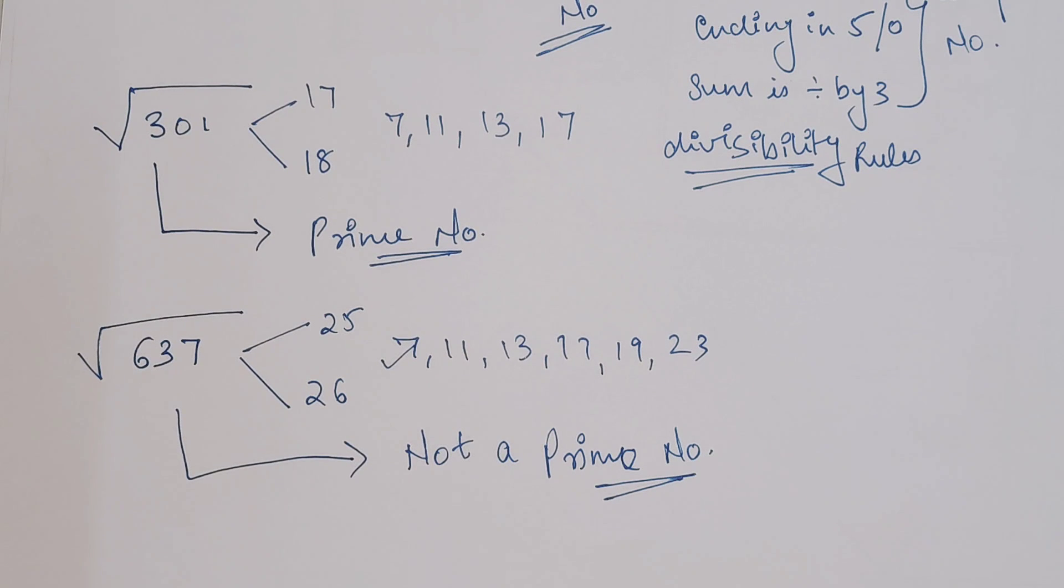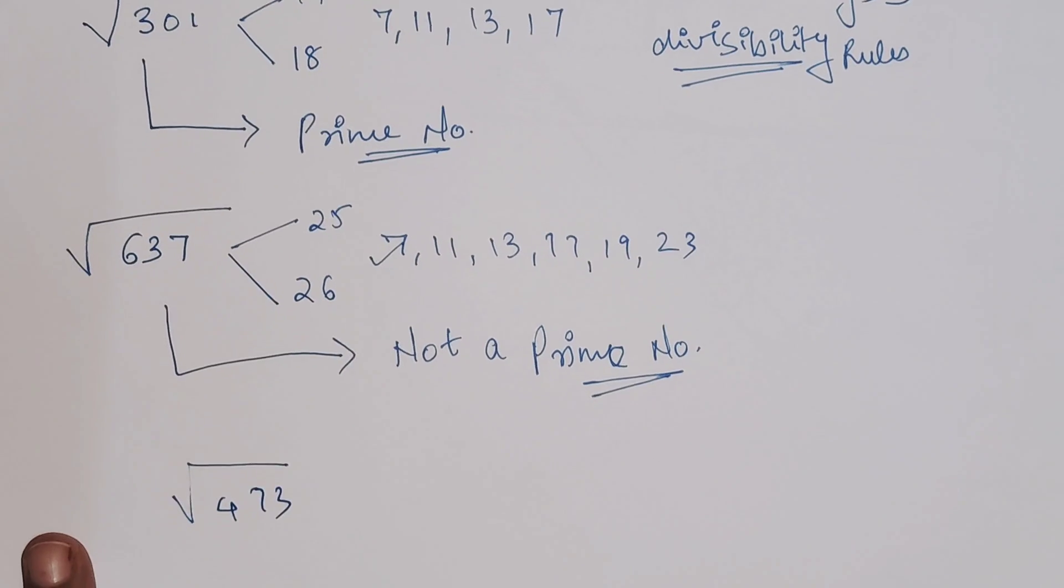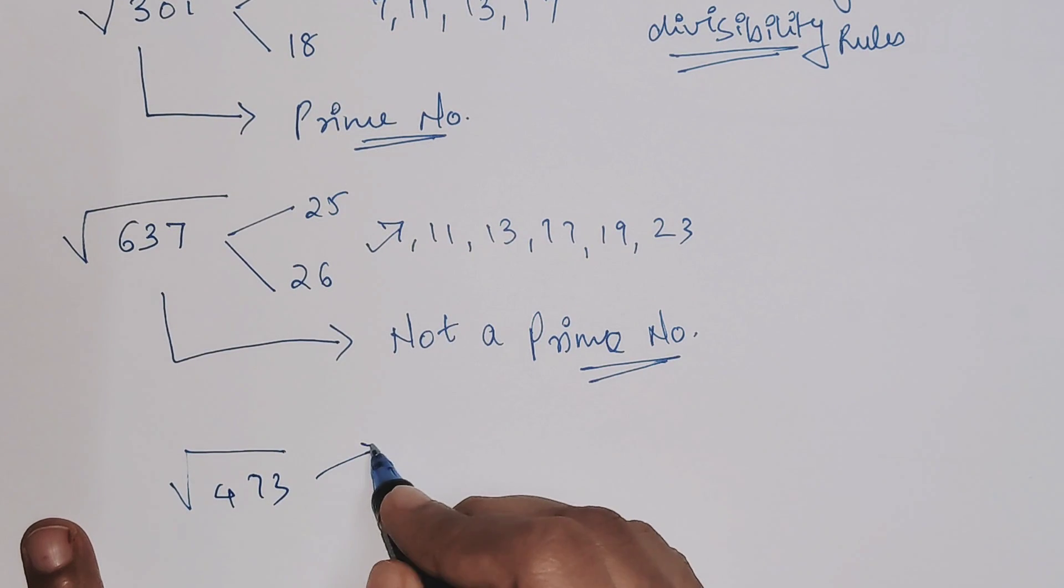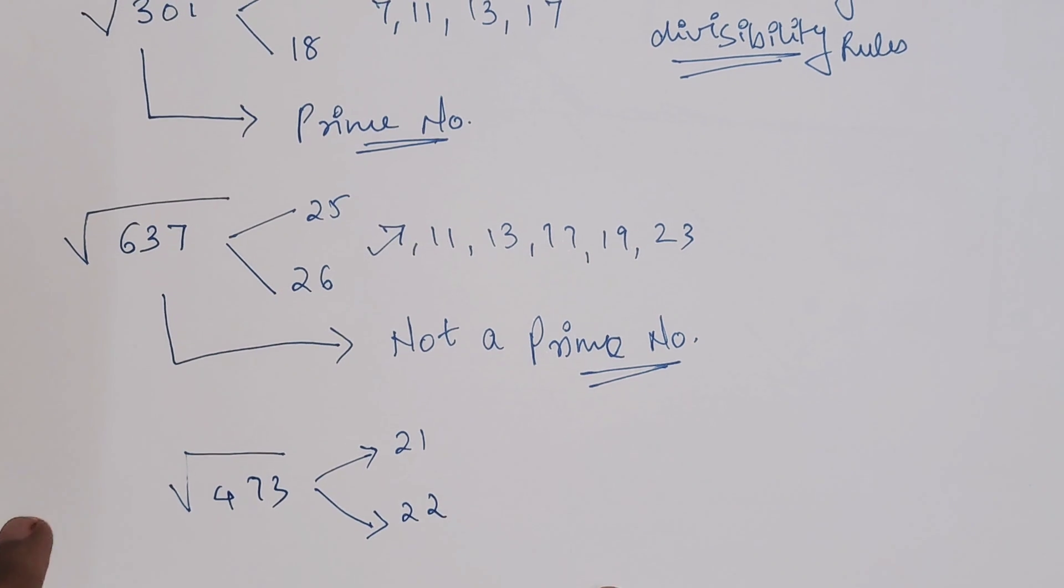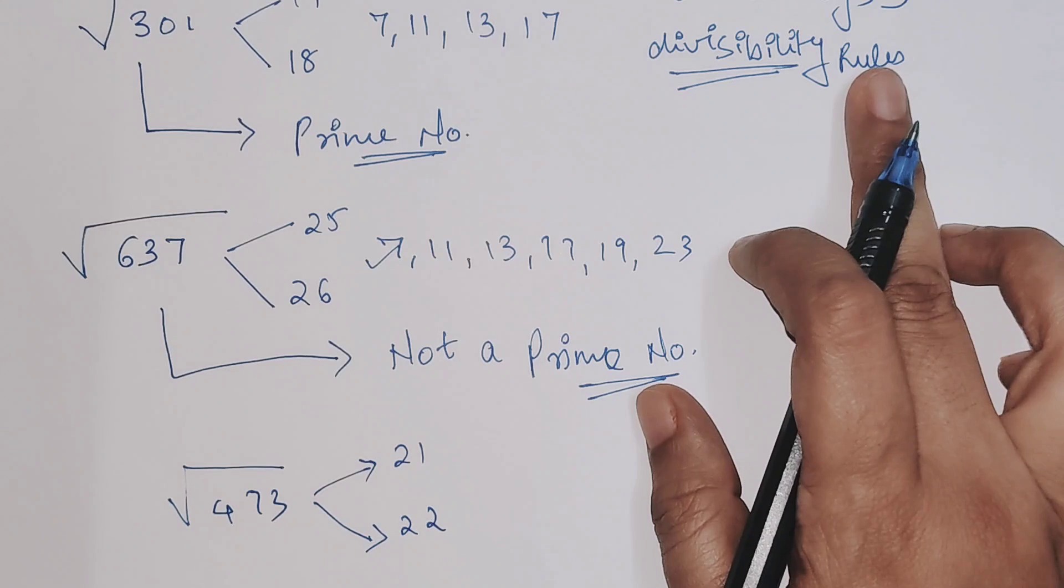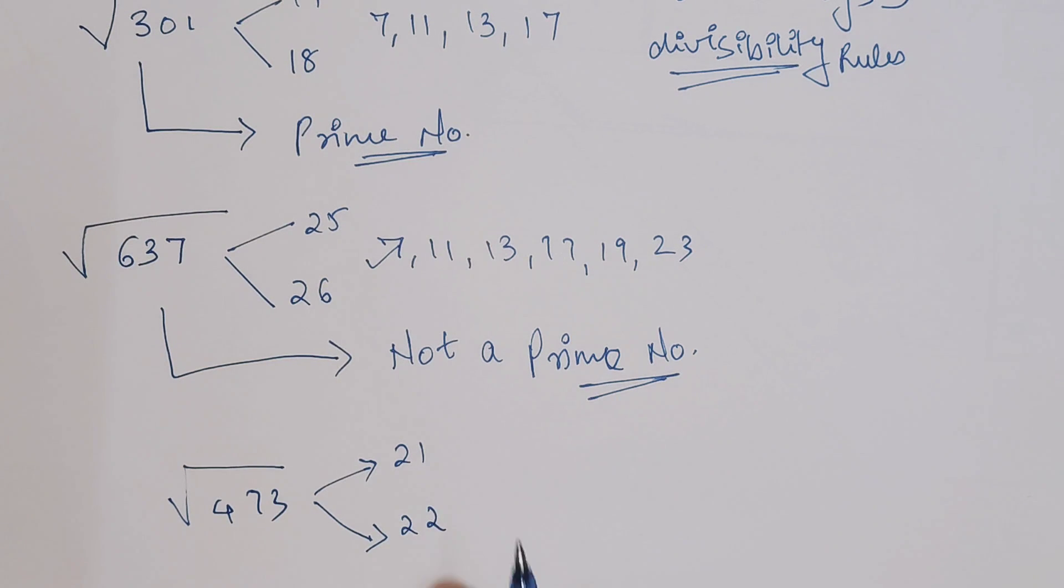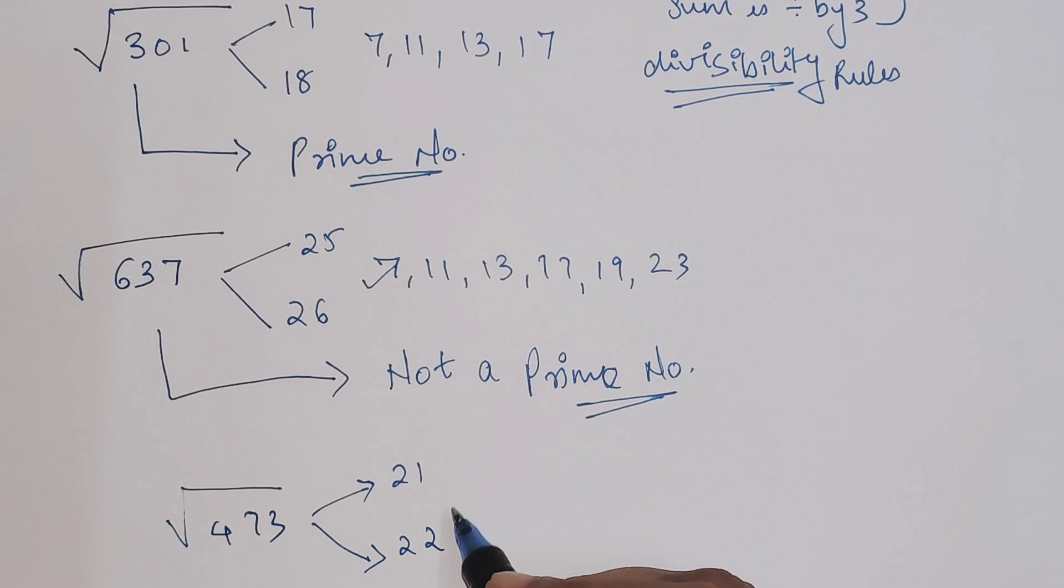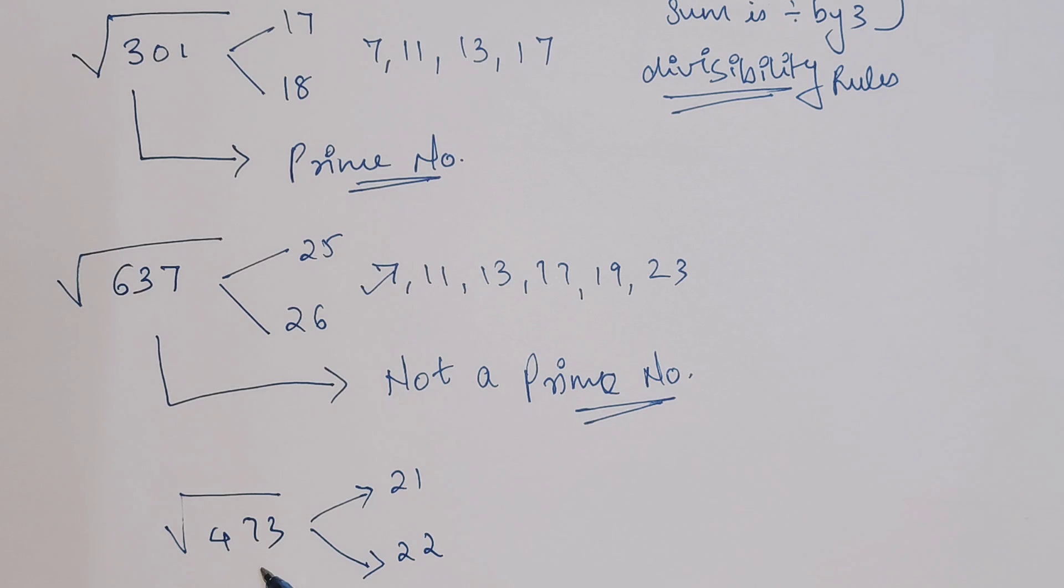Let's do one more. The given number is 473, which is lying between 21 and 22. Please understand, to use this particular trick, your knowledge of divisibility rules and square roots has to be very strong. Without that, using this trick will get a bit difficult.